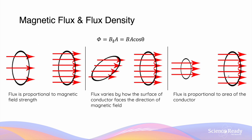This diagram will help you understand the relationship between flux and the other variables shown by the equation. In the first diagram, we have two metal loops of the same area. However, in the second example, we have a higher flux density, or higher magnitude of magnetic field. By having a higher density, the amount of magnetic flux increases — as B increases, the value of Phi, or flux, will also increase.